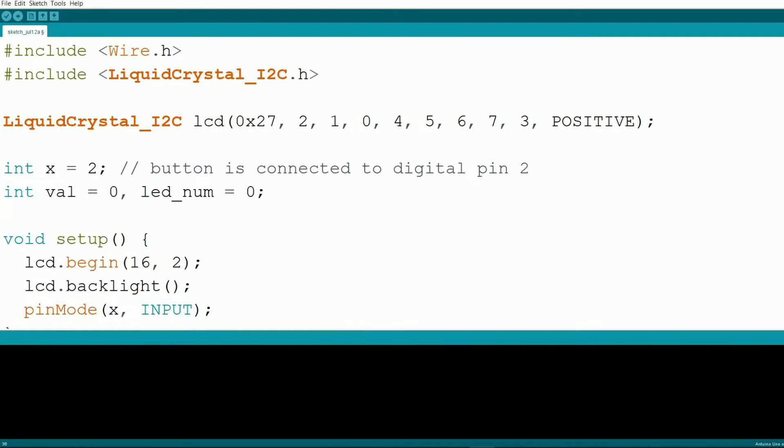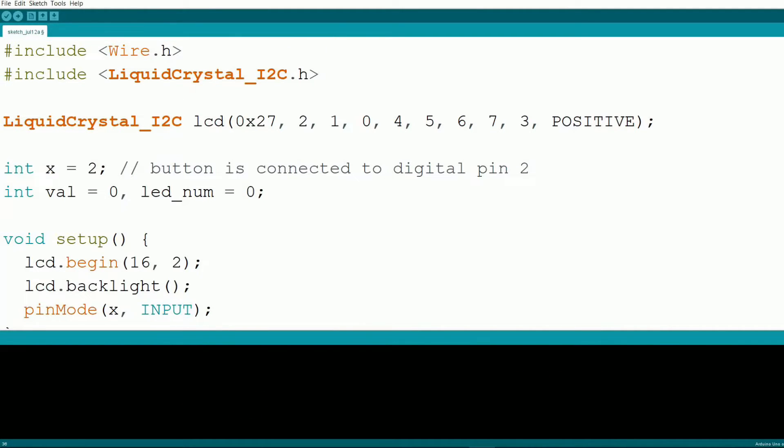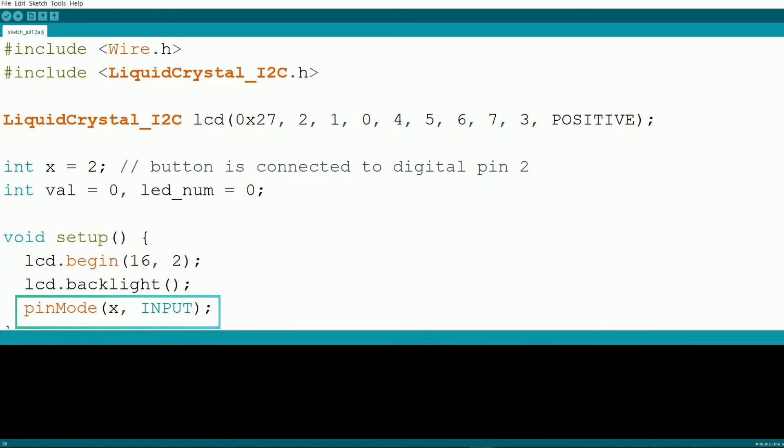Let's break down the code. First, we include the necessary libraries: Wire.h for i2c communication and LiquidCrystal_I2C.h for controlling the LCD. We define the LCD object with the specific pins connected to the i2c module. We also define the button pin and create variables to track the button state and the current menu. In the setup function, we initialize the LCD with LCD.begin to set it up as a 16x2 display. We also turn on the backlight with LCD.backlight and set the button pin as an input.